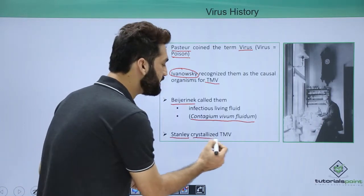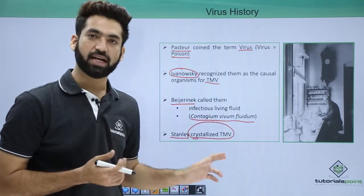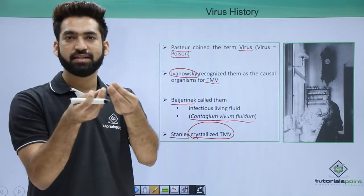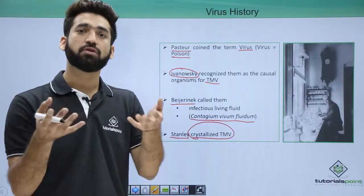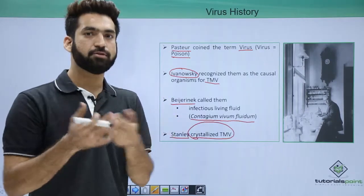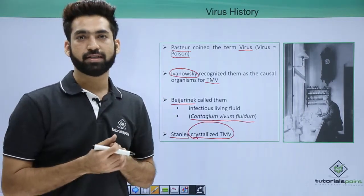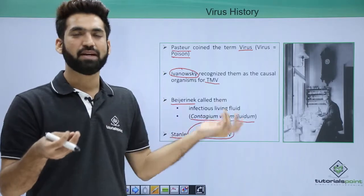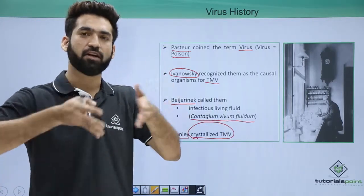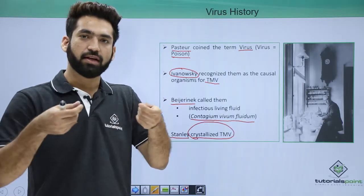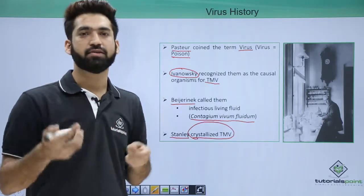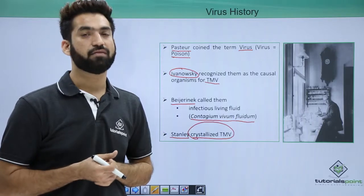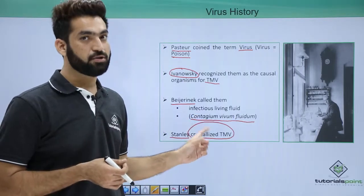The fourth name is W. Stanley, who crystallized TMV for the first time. Tobacco mosaic virus is the first crystallized virus. Crystallization means making crystals — for example, sugar comes from sugarcane juice but appears as crystals. The process involves lyophilization, which means removal of water, and then drawing crystals from the lyophilized powder. Crystallization is only a property of non-living things, so viruses are also considered non-living.